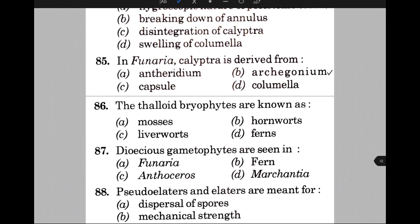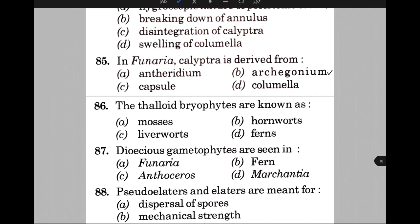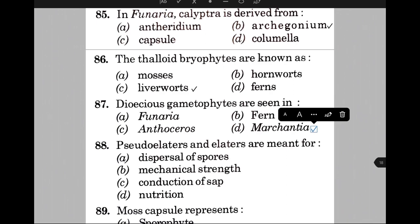Dioecious gametophytes are seen in — the answer is D, that is Marchantia. Pseudoelaters and elaters are meant for — the answer is option A, that is dispersal of spores.